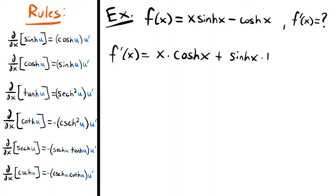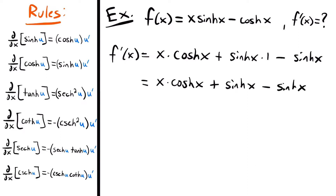We still need to take the derivative of negative hyperbolic cosine of x, so we subtract the derivative of hyperbolic cosine of x, which is hyperbolic sine of x. Multiplying by the derivative of x gives just 1, so we have hyperbolic sine of x. Simplifying, we get x times hyperbolic cosine of x plus hyperbolic sine of x minus hyperbolic sine of x. The sine terms cancel, leaving f prime of x equal to x times hyperbolic cosine of x.